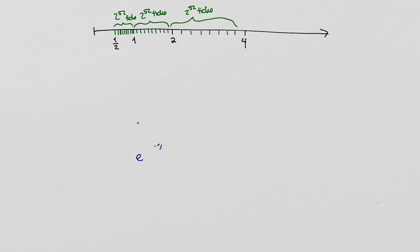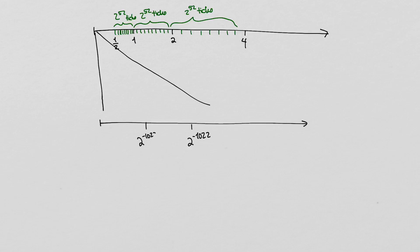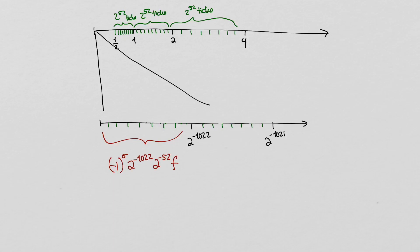There is one problem with this setup at the bottom end. The smallest representable non-negative number is 2 to the minus 1023. So we make a special rule for the e equals 0 value and use it to represent numbers all the way from 0 to 2 to the minus 1022, instead of just the numbers in the second half of that interval. These are called subnormal numbers.